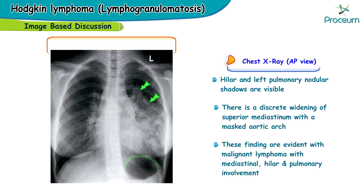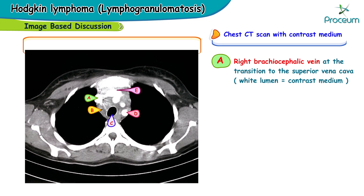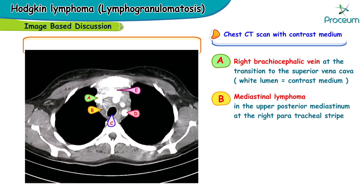These findings are consistent with malignant lymphoma with mediastinal, hilar, and pulmonary involvement. Here's the chest CT scan with contrast medium. You can see the right brachiocephalic vein and the transition to the superior vena cava, with whitish contrast in the lumen. There is mediastinal lymphoma in the upper posterior mediastinum at the right paratracheal stripe.